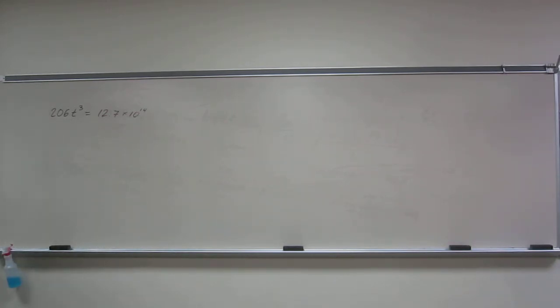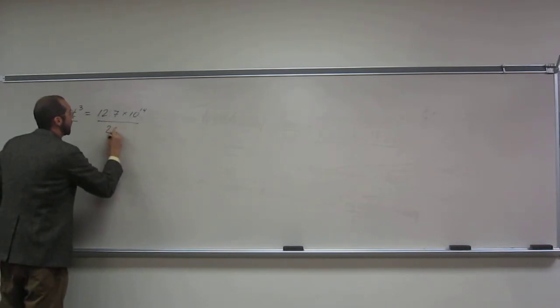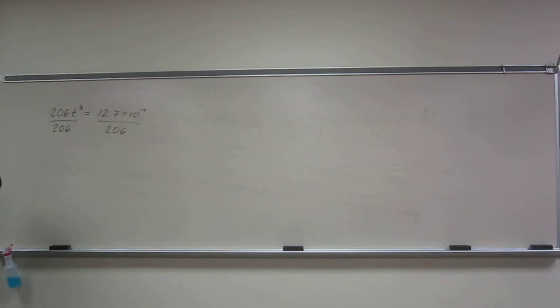What was the first step, did we say? Divide both sides by 2.06. So when we do that, what happens to this side over here? It's not t3, it's called t cubed.